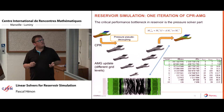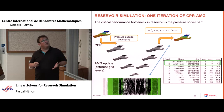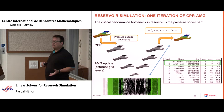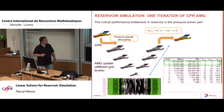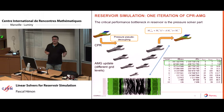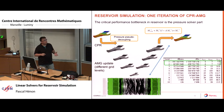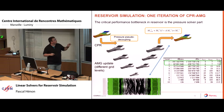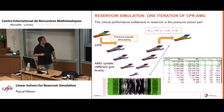At each iteration of the CPR preconditioner, you decouple the pressure unknowns from the other unknowns. Since we don't need a very accurate solution for the pressure, we usually only need one V-cycle of multigrid at the pressure level to get this approximate pressure solution, because what we want at the preconditioner level is to capture the low-frequency modes of the error that are only due to the pressure part of the system.